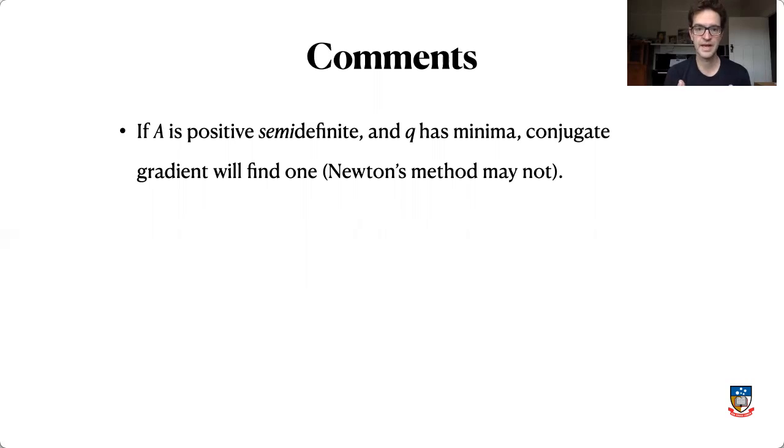So in cases where A is positive semi-definite, you may not have a unique minima and you may not have minima at all. It could just go down and down forever. But in cases where you do have a minima, where that function Q has a minima, the conjugate gradient method will find one of those minima.